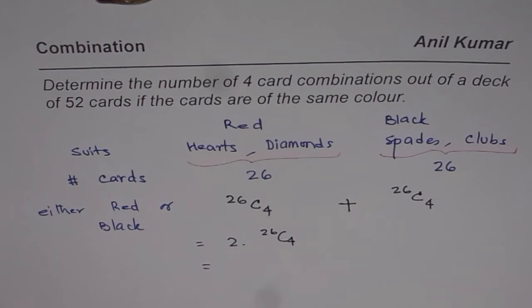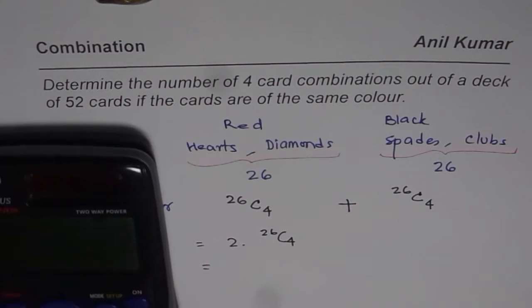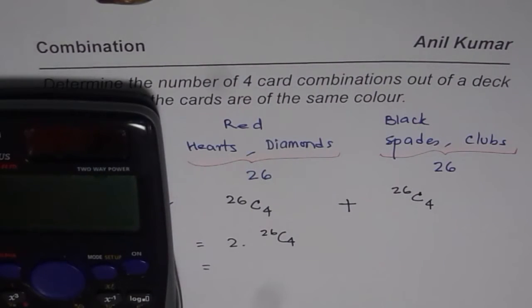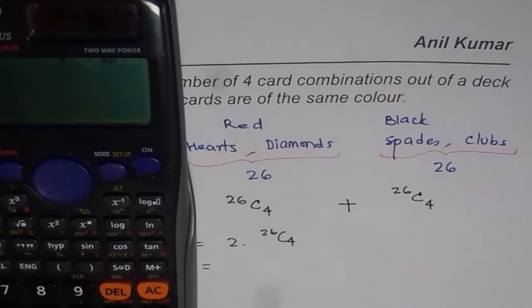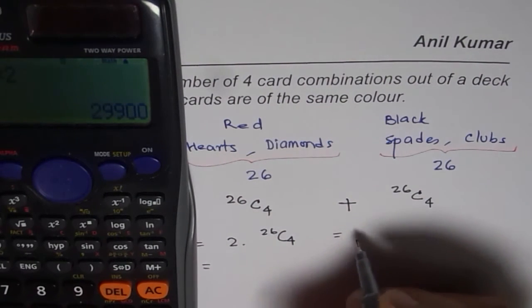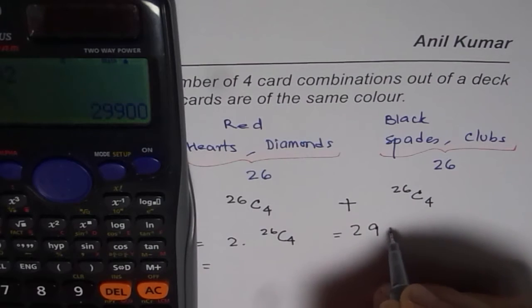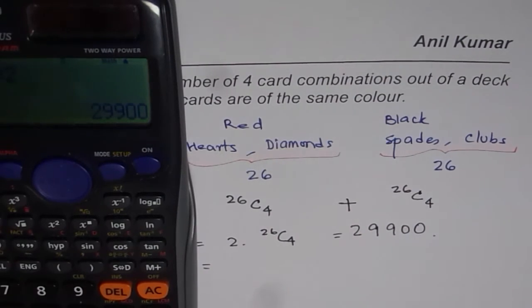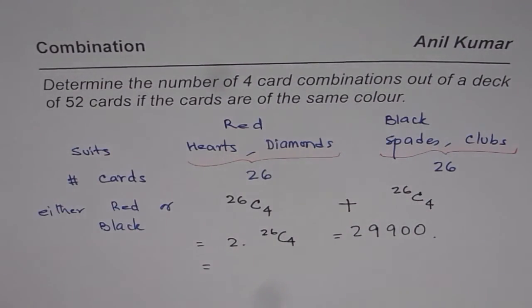We can now use the calculator to find the answer. So 26C4 is equal to 4950, times 2 equals 9900. That becomes the answer for the given question. That is how you would actually do such questions. I hope that helps. Thank you.